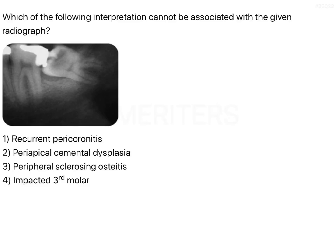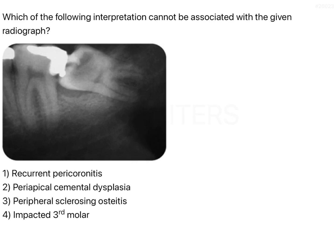The question asks which of the following interpretations cannot be associated with a given radiograph. Read carefully — it is 'cannot' and not 'can,' so you are trying to eliminate the wrong answer. That means three options are right and one option is wrong.